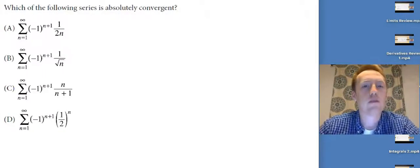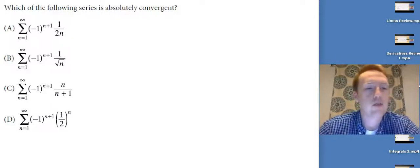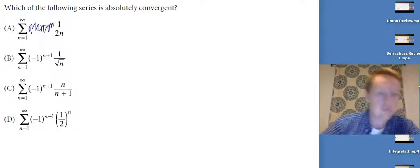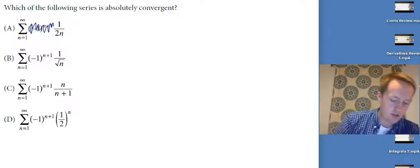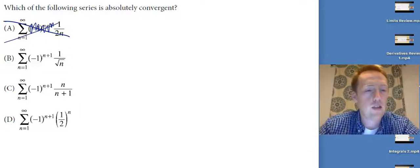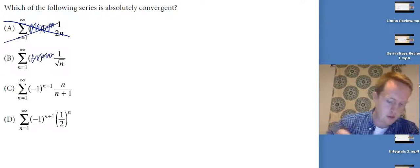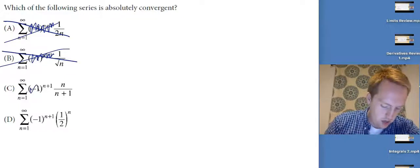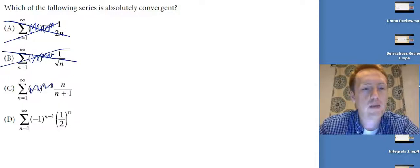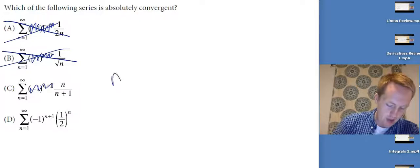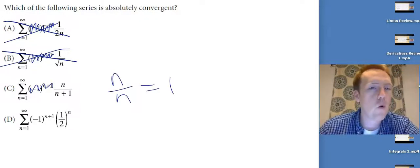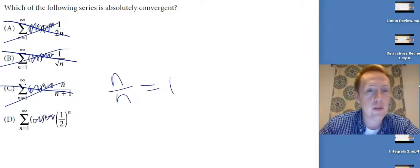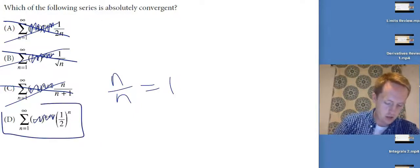Which of the following series is absolutely convergent? Absolutely convergent means I can rip off the alternator and it will still converge. Option A without the alternator would basically be one-half the harmonic series — that would not converge, that would be conditionally convergent. Option B without the alternator is a P-series where P equals one-half — that does not converge. Option C: looking at the highest term on top and bottom, you've got N over N which is one — adding up infinite ones doesn't converge. Option D: ripping off the alternator gives a geometric series where R is less than one. That converges — that is our answer.